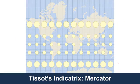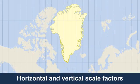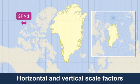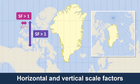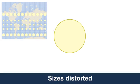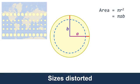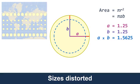We can look at Tissot's Indicatrix in relation to the Mercator projection. Here we can see that the circles are still circles, but the sizes are changing. Looking at Greenland again, we can see distortion in the east-west direction where the scale factor is greater than one because the meridians no longer converge. We also have a scale factor greater than one in the vertical direction because of stretching in the north-south direction.